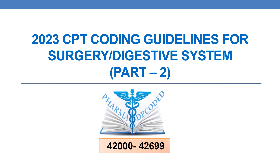Hello everyone, let us discuss 2023 CPT coding guidelines for surgery digestive system part 2. In the current session, we will be focusing on CPTs in the range 42000 to 42699.